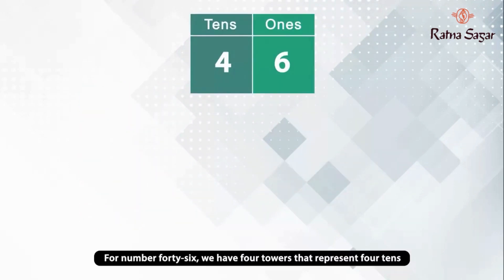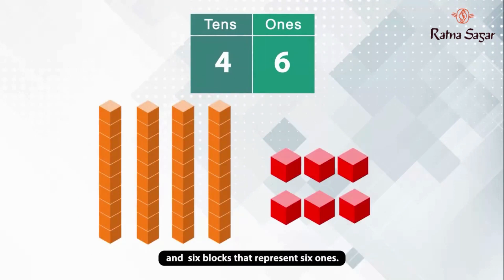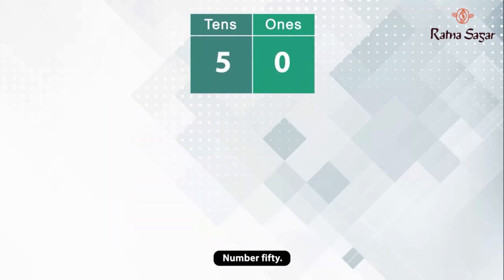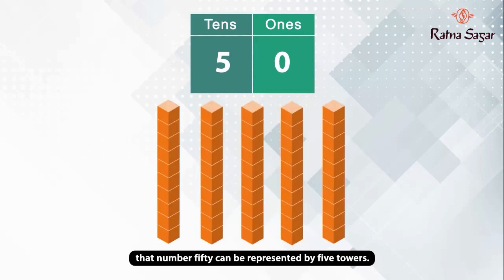For number 46, we have 4 towers that represent 4 tens and 6 blocks that represent 6 ones. Number 50 comes just after 49, and we can see that number 50 can be represented by 5 towers.